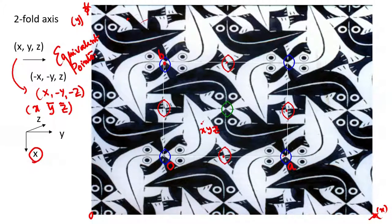In a two-fold symmetry containing object, if there is a two-fold axis, the equivalent points are x, y, z and x-bar, y-bar, z — if z is the direction of the two-fold axis, i.e., if z coincides with the two-fold axis. We will now go further and examine from this stage how we can look at the other axes and other symmetry positions which can come up.